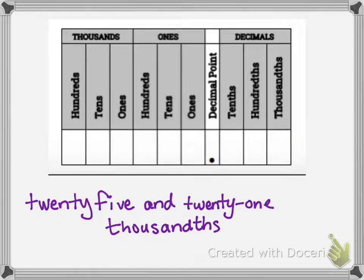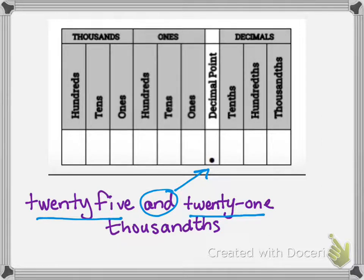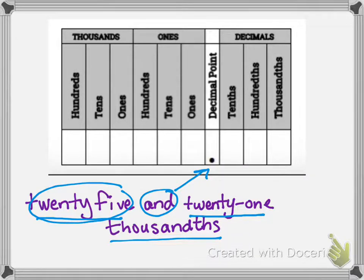Sometimes you'll get a number in word form and you have to write it in standard form. We see the word 'and' — we know that's our decimal. Whatever is on the left side of 'and' goes to the left of the decimal, and everything on the right side of 'and' goes to the right of the decimal. We deal with whole numbers first: we see twenty-five, so we write in twenty-five. Double check — twenty-five. Yes.